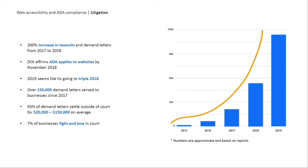At first, only the largest enterprises and government institutions were legally pressured to become accessible. One of the most significant shifts in the legal climate was when the Department of Justice at the end of 2018 officially affirmed that all websites are considered public accommodations and therefore must comply with Title III of the ADA.